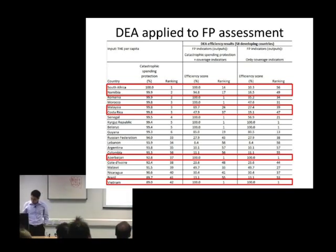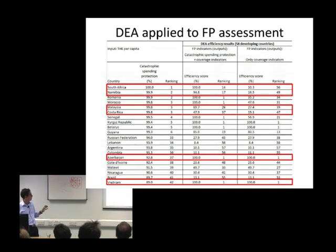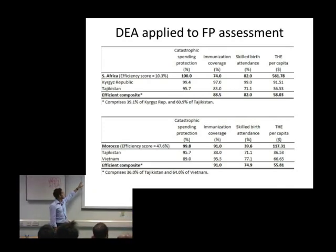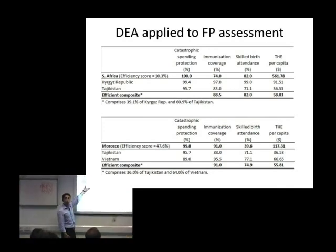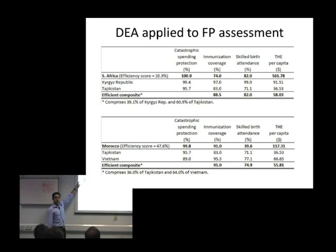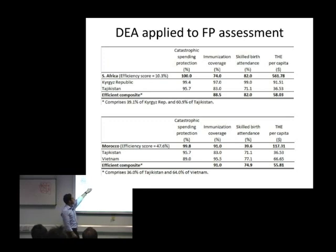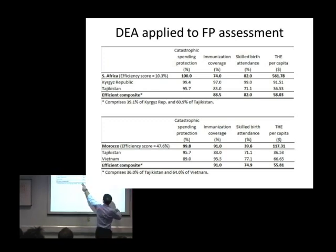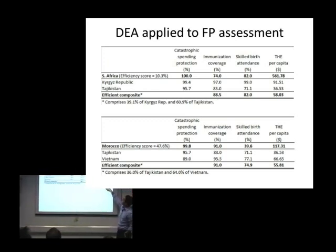To illustrate the kind of results available for each country, here are results for South Africa — the top performer in catastrophic spending protection — which had an efficiency score of only 10 percent when looking at access indicators. Its efficient peers were the Kyrgyz Republic and Tajikistan, and an efficient composite between the two achieves the same or better levels of financial protection while spending only 10 percent of what South Africa spends on health — 58 dollars per capita compared to 561 dollars.